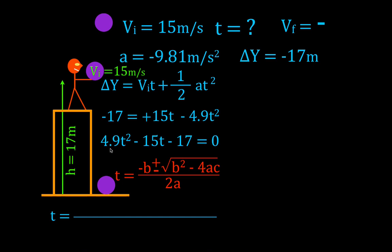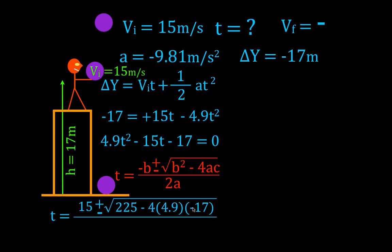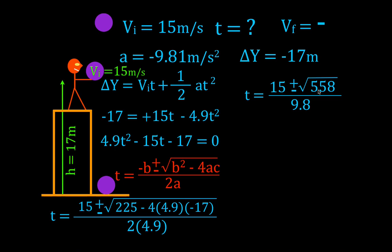Identifying the coefficients: a equals 4.9, b equals minus 15, and c equals minus 17. Substituting into the quadratic formula: minus b is positive 15, b squared is 225, and minus 4ac equals minus 4 times 4.9 times minus 17, all divided by 2 times 4.9. Working through the math, we get t equals 15 plus or minus the square root of 558, divided by 9.8.